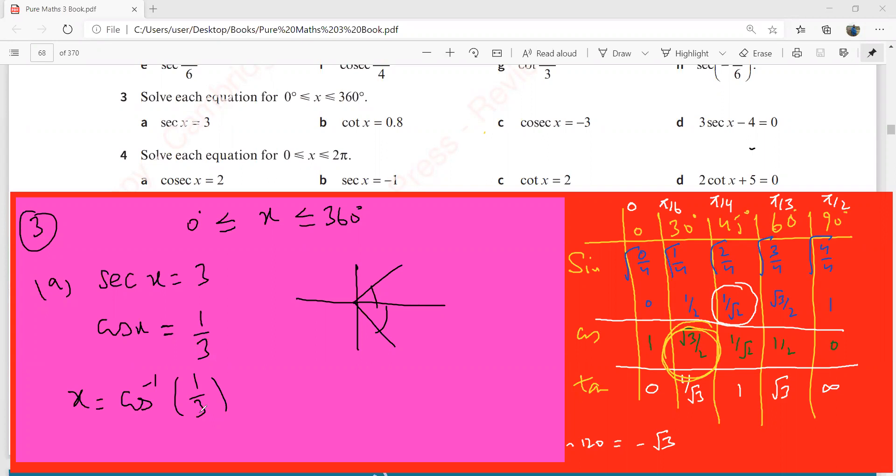Cos inverse of 1 over 3 is 70.5 degrees. This is 70.5 and also 70.5 here. So your x is going to be 70.5 or 360 minus this, which is 289.5 degrees. These are the two solutions.